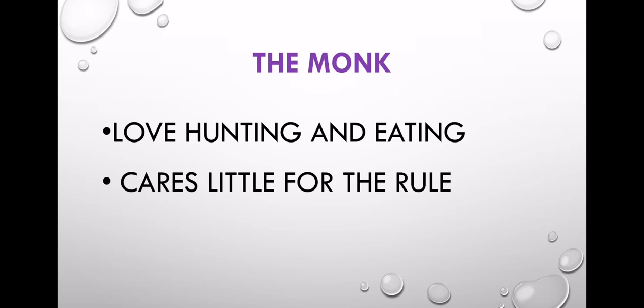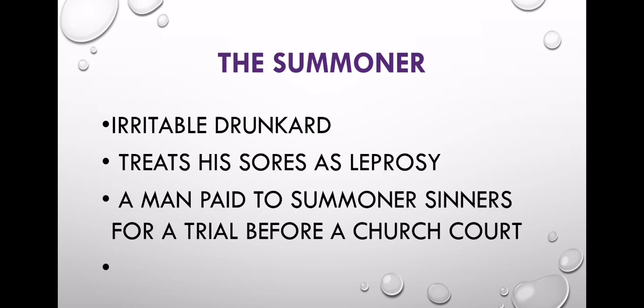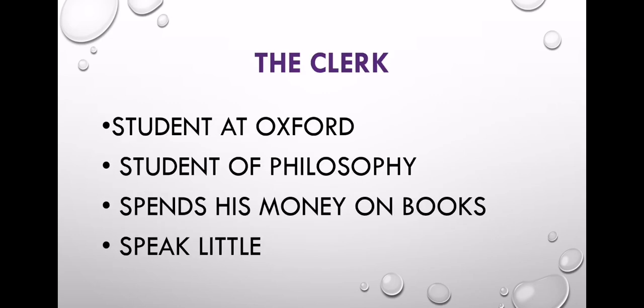The Pardoner's long story contains a sermon called the Seven Deadly Sins. The Monk loves hunting and eating. The Summoner is an irritable drunk who treats his sources like leprosy. A man pays the Summoner for a trial before a church court.